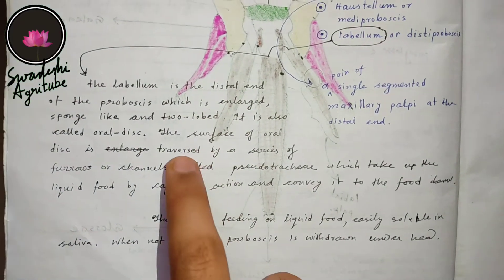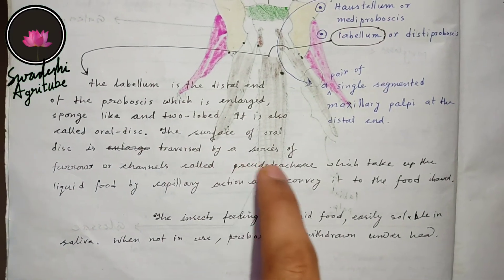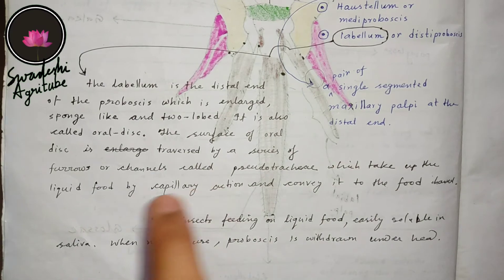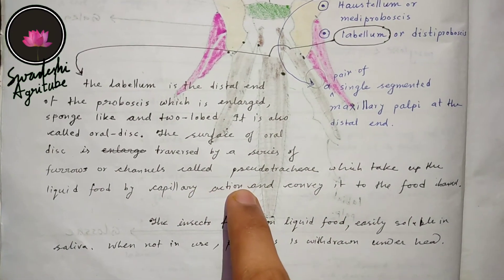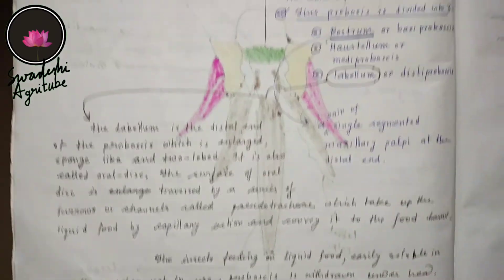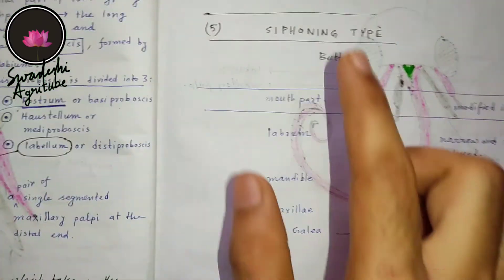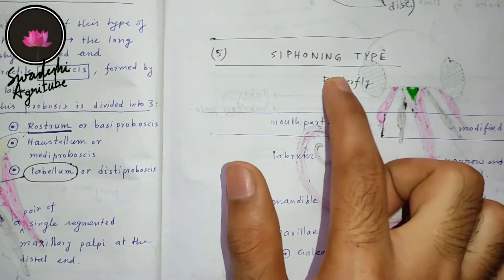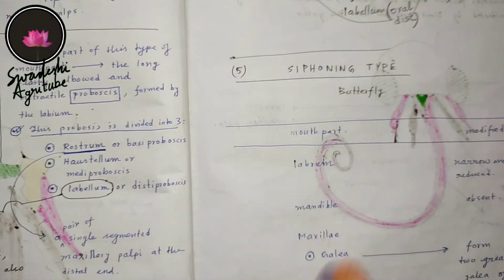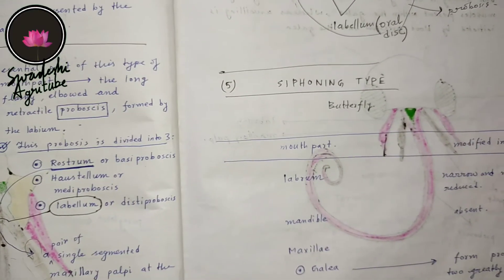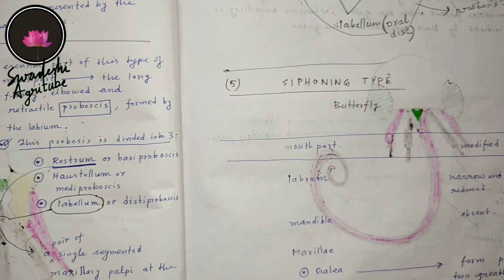The labellum is the distal end of the proboscis, enlarged, two-lobed, and has pseudotrachea through which food is taken by capillary action. The next video will be on the siphoning type of mouthparts. I'm requesting you to watch the previous videos as well. Thanks for watching.